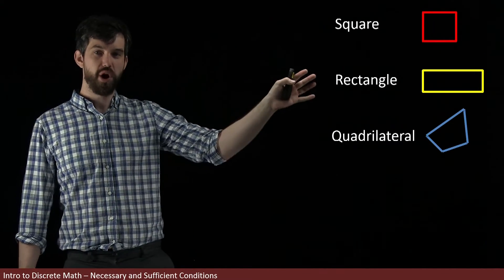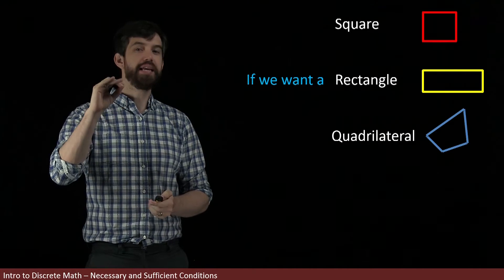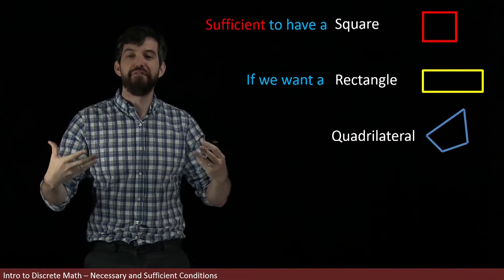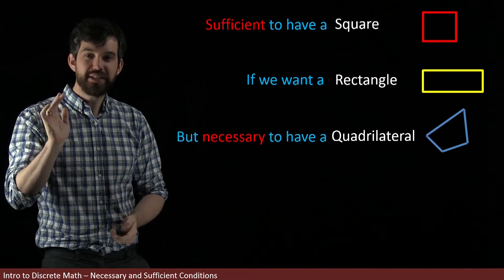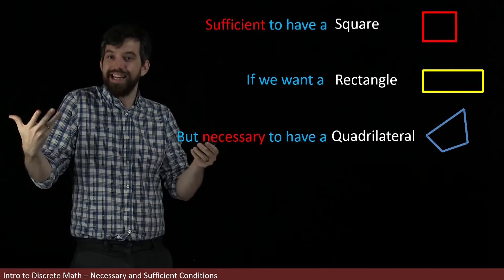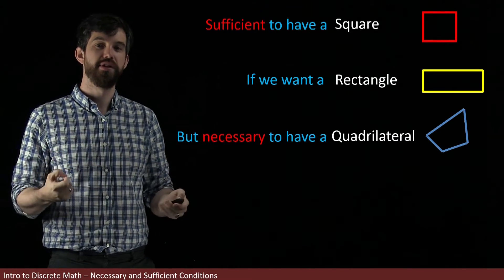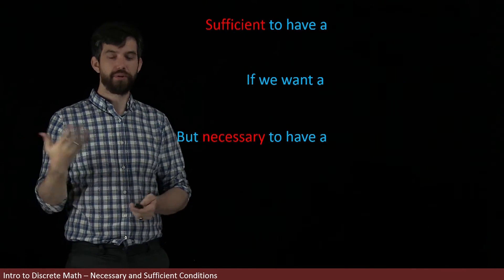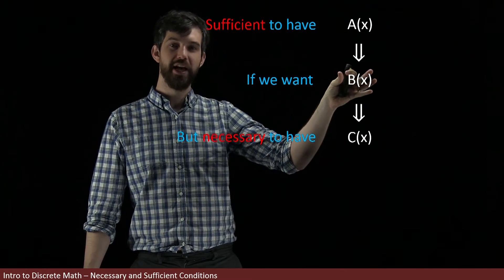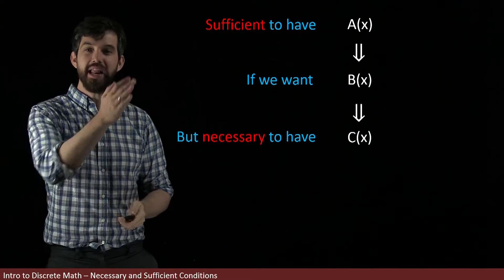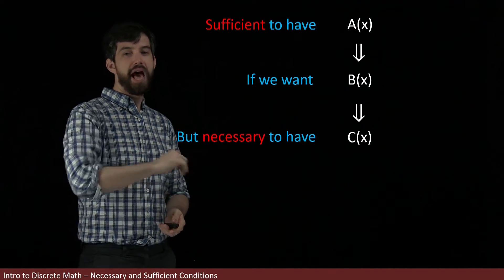Going back to our three shapes — and keeping in mind that concluding rectangle is the goal — squares and quadrilaterals both had a relationship with rectangles, but slightly different ones. For the square, it was sufficient: having a square is enough to conclude rectangle, though you don't need it to be a square. For the quadrilateral, it was necessary: you must have a quadrilateral, but a quadrilateral alone isn't enough to deduce a rectangle. In the general case, if A(x) implies B(x) implies C(x), the former is the sufficient condition and the latter is the necessary one.